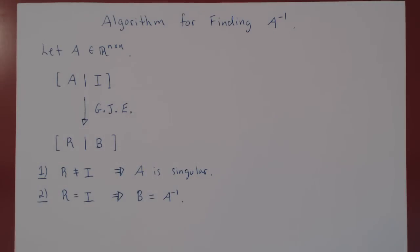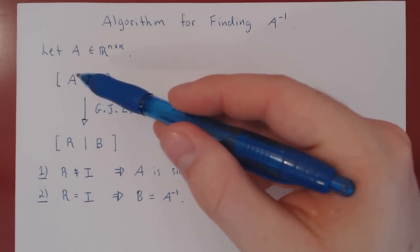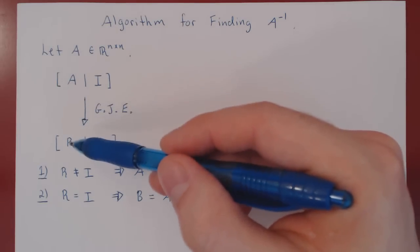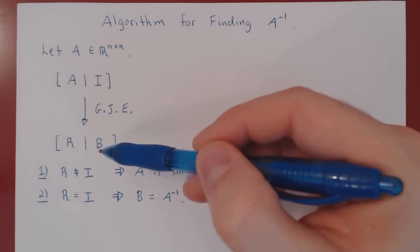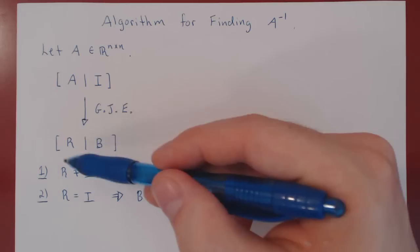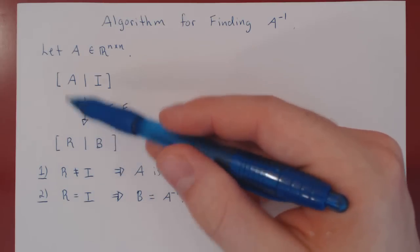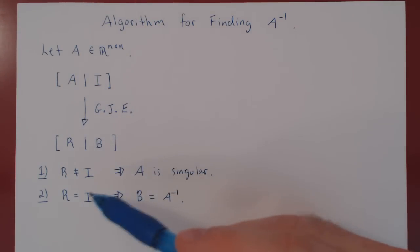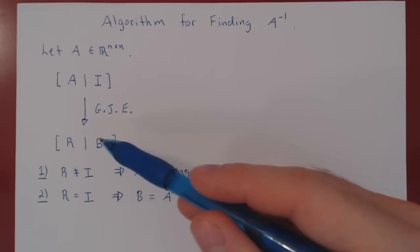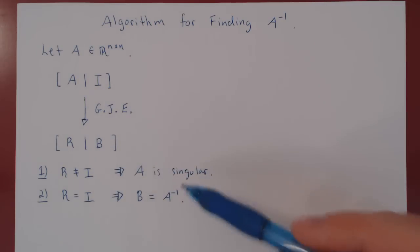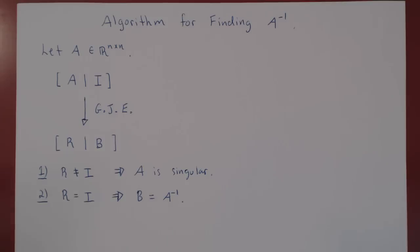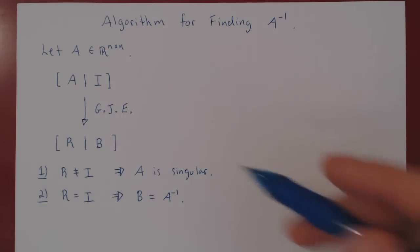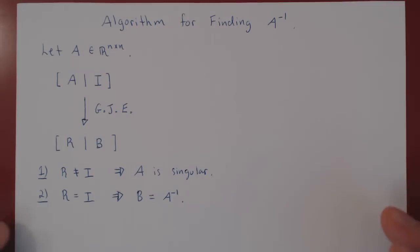So B is the inverse of A. It is that simple: augment A with I, row reduce A, apply the same row operations to I. Once you reach the reduced row echelon form of A — if it is not equal to I, A is singular; if it is equal to I, B is A inverse. We won't prove this yet, but let's look at two examples of how this plays out.